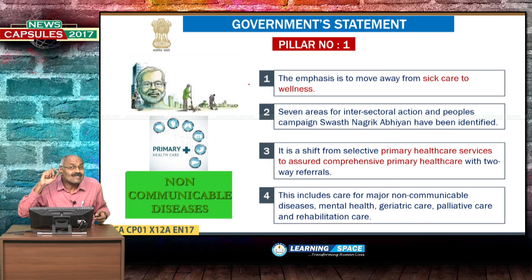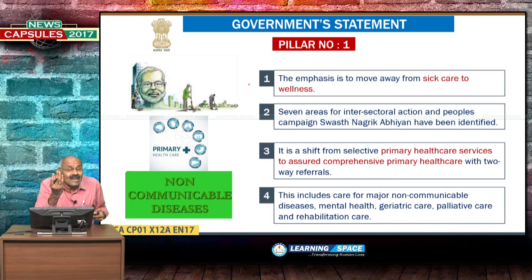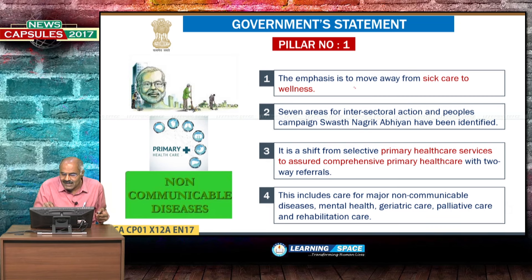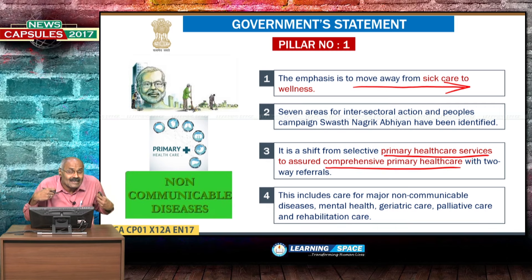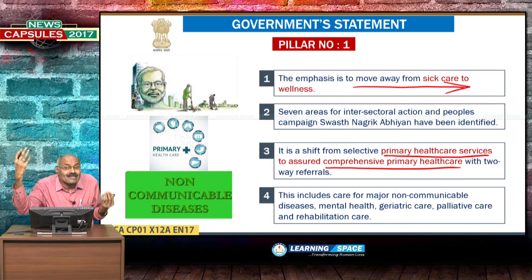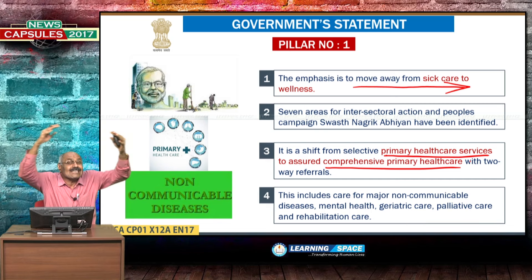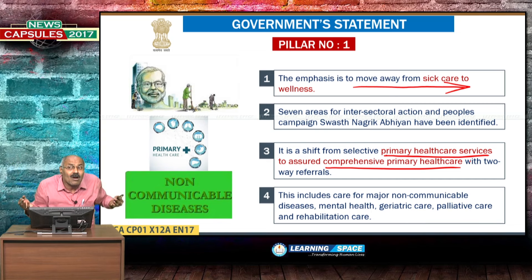Now let us look at the government's statement. The government states there are four pillars in the National Health Policy. Pillar number one: the emphasis is to move away from sick care to wellness. The basic shift is from selective primary health care services to comprehensive primary health care. Health will be looked at in totality, not on a selective basis.